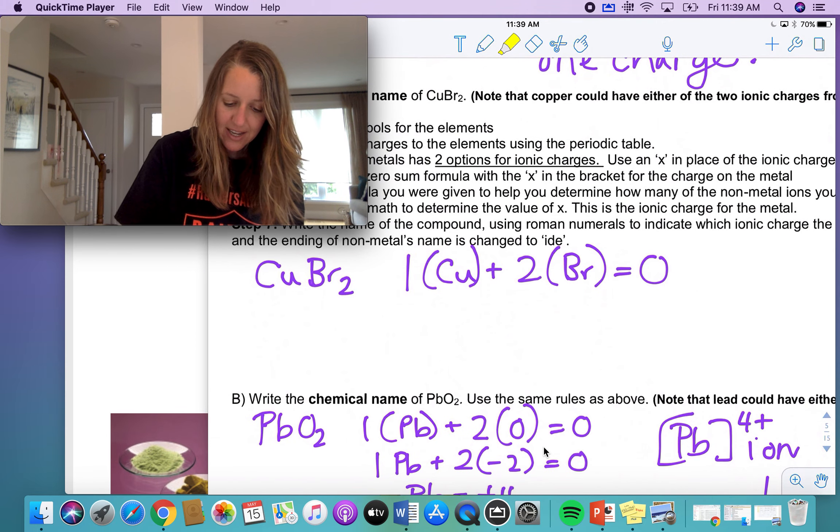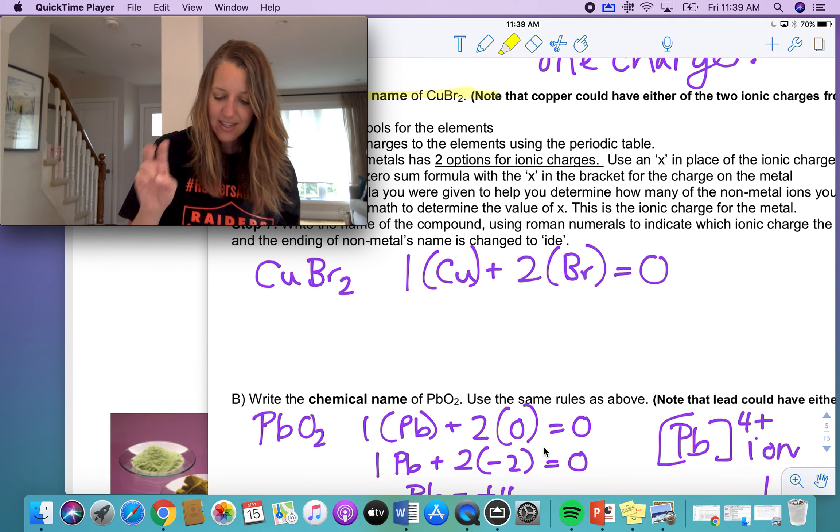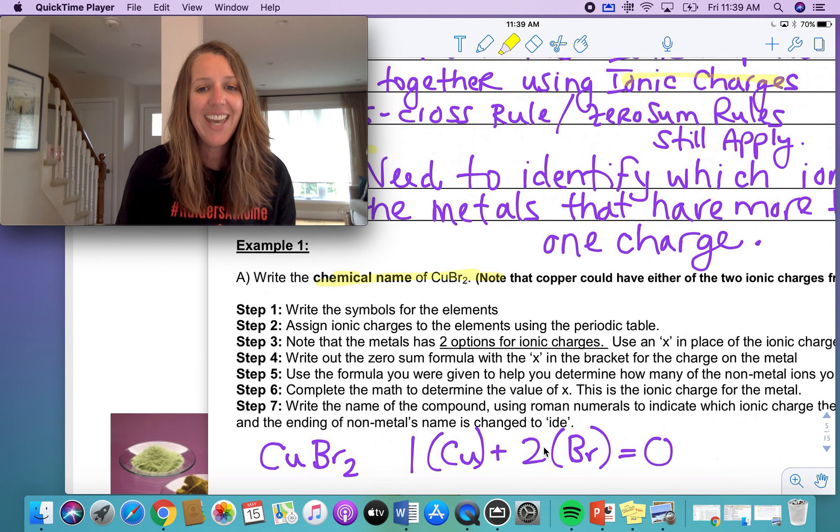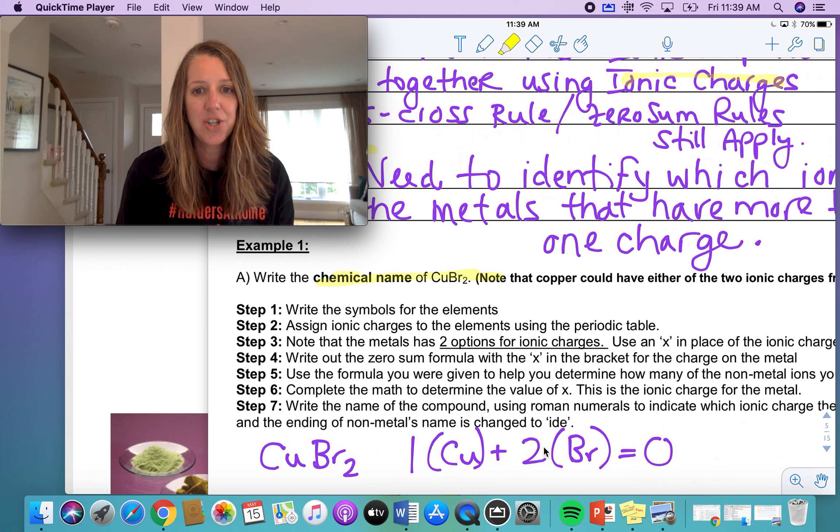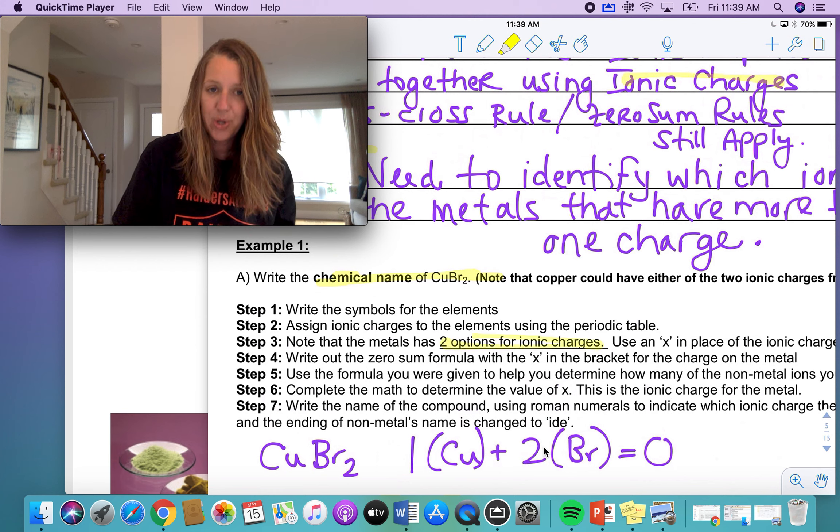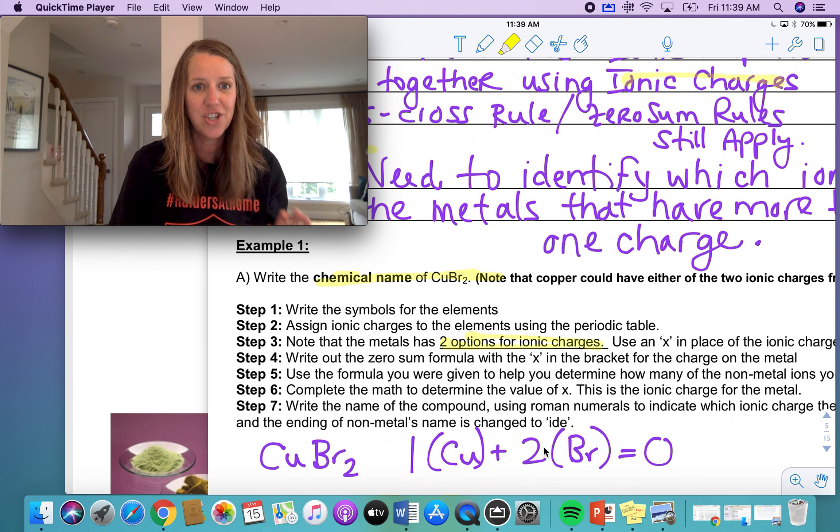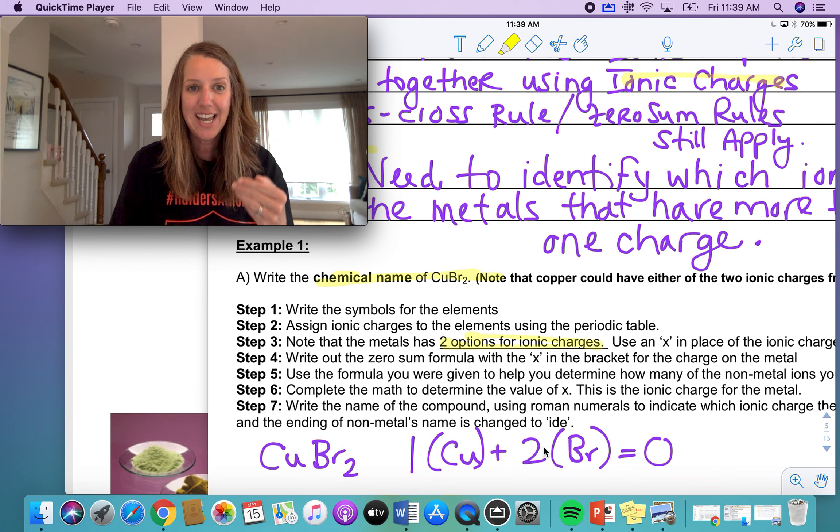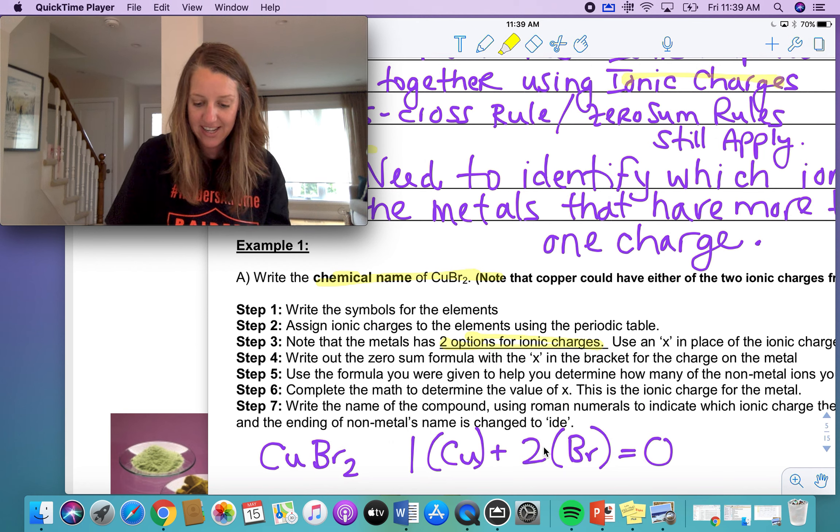So here we go. You're making a compound. It says, write the chemical name for a compound that is CuBr2. So again, this is now transition metals. I find copper on my periodic table and I realized that there are two options for the ionic charge. So I can't just call it copper bromide. If there are two charges, then I have to tell it what ion is it.